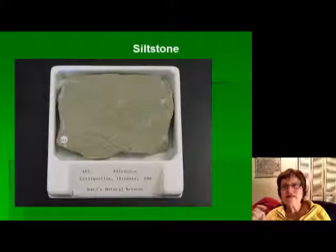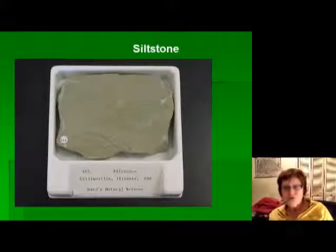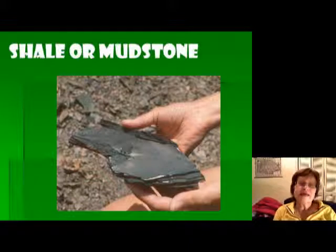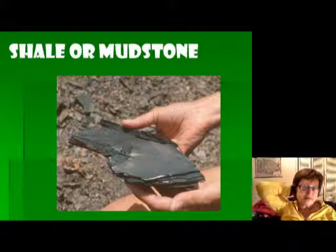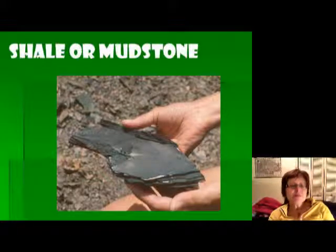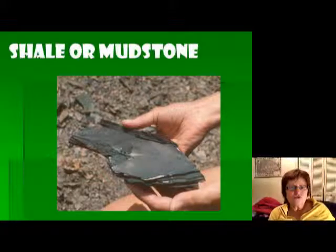Siltstone has grains between 0.063 and 0.005 mm and mostly contains quartz and clay minerals — the two most durable minerals on Earth's surface. The last clastic type is mudstone or shale. Mudstone is very fine-grained, less than 0.005 mm. When it splits into thin layers we call it shale. Color is not important for identifying sedimentary rock type — you can have any color of shale, sandstone, or mudstone.